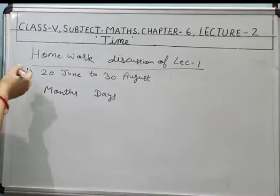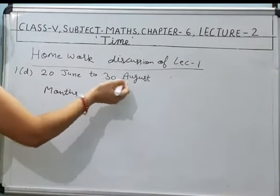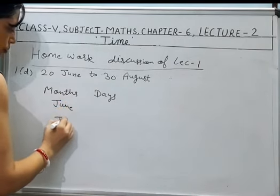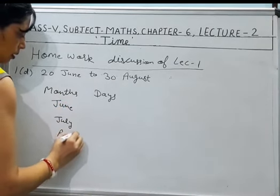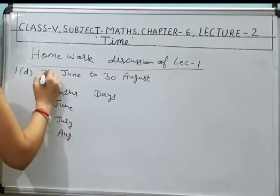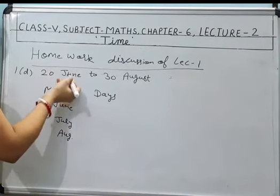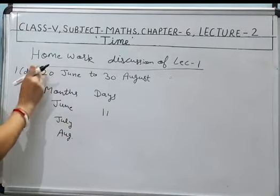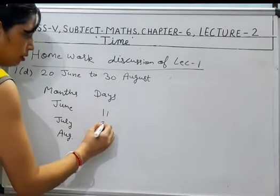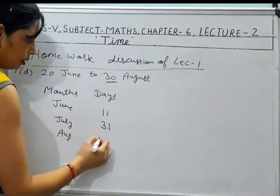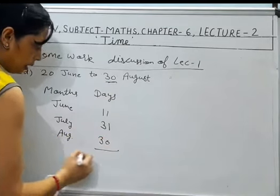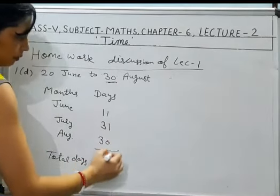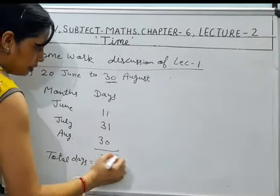Next part is D part: 20 June to 30th August. So month: June, July, August. From 20 you have to start counting up to 30th - 11 days. Don't get confused at 10 days, 20th you will add. July 31 and August 30 days. And total days - 72 days are there. Right?